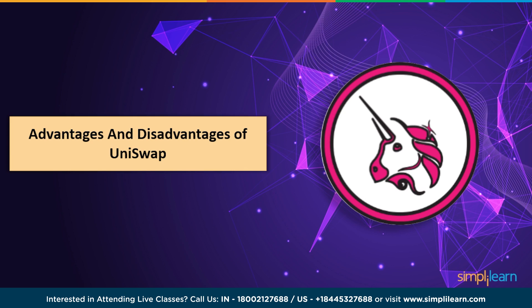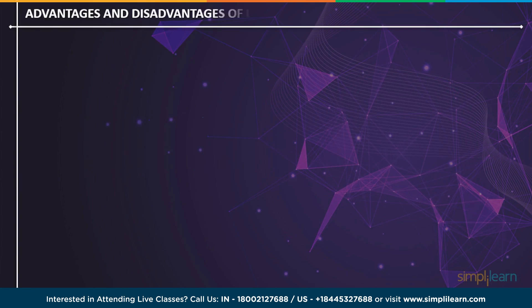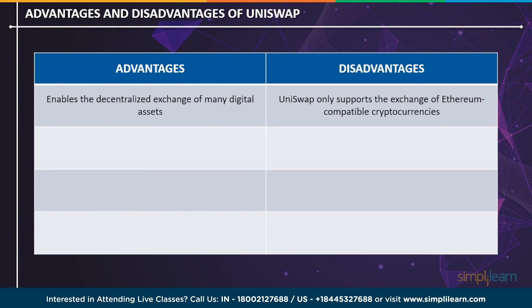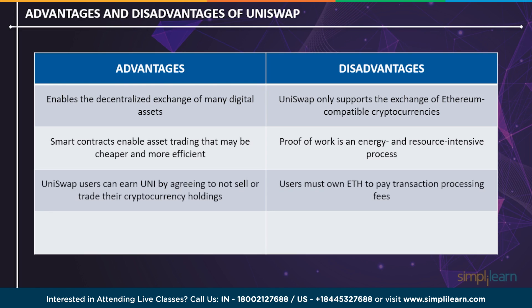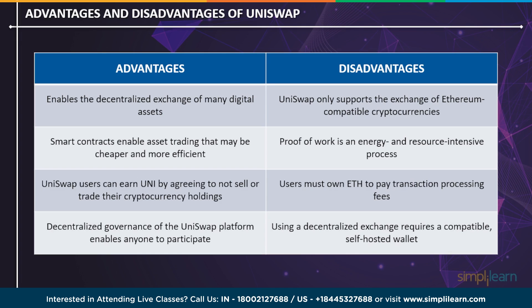Uniswap enables the decentralized exchange of many digital assets, but it only supports the exchange of Ethereum-compatible cryptocurrencies. Second, smart contracts enable asset trading that may be cheaper and more efficient, but it still uses proof of work, which is an energy and resource-intensive process. Third, Uniswap users can earn UNI by agreeing to not sell or trade their cryptocurrency holdings, but users must use ETH to pay transaction processing fees. Fourth, decentralized governance of the Uniswap platform enables anyone to participate; however, using a decentralized exchange requires a compatible, self-hosted wallet.